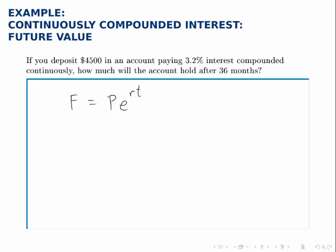So the question asks, if you deposit $4,500 into an account that pays 3.2% interest compounded continuously, how much will the account hold after 36 months?